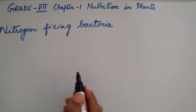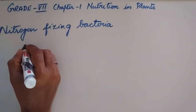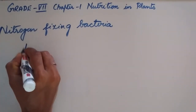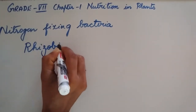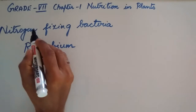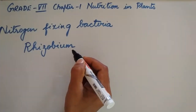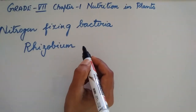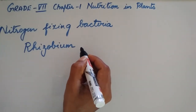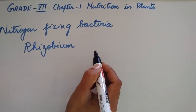For example, the bacteria Rhizobium is a nitrogen-fixing bacteria. This is how plants produce other components of food besides carbohydrates.